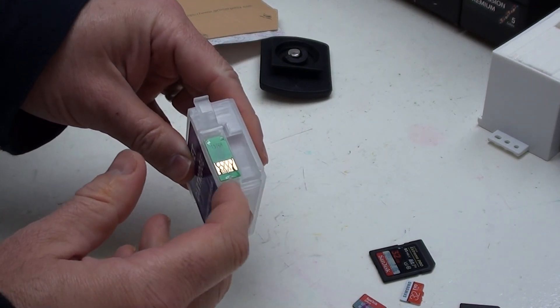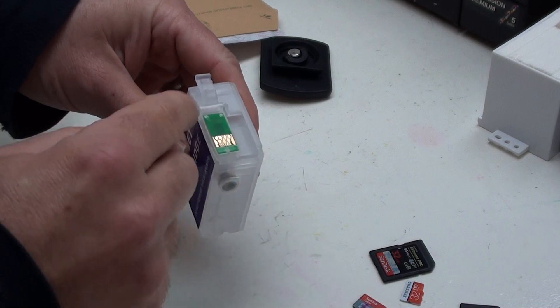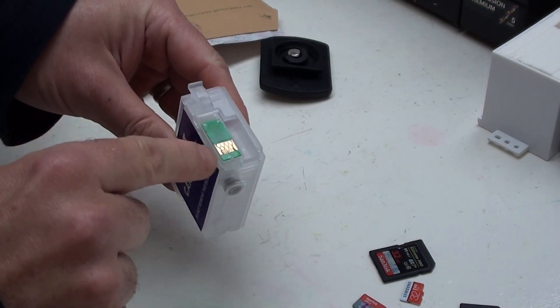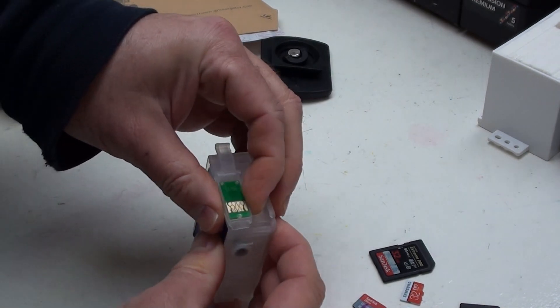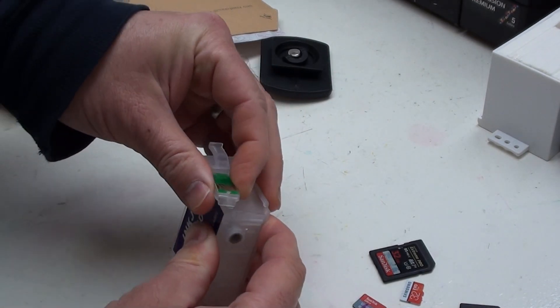To remove it, you need to release this end of the chip holder. The chip is actually sitting on a bit of plastic that's removable. You just wiggle this about a little bit, and as you can see, it's lifting up.